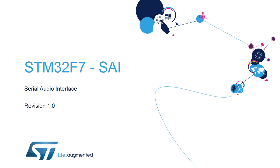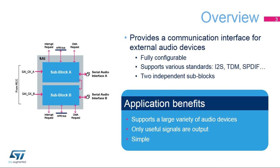Hello, and welcome to this presentation of the STM32 Serial Audio Interface, or SAI. It covers all the features of this interface, which is widely used to connect external audio devices. The SAI integrated inside STM32 products provides an interface allowing the microcontroller to communicate with external audio devices such as amplifiers, ADCs, DACs, or audio processors. This interface is fully configurable and supports most audio standards, allowing easy connection to existing audio devices.